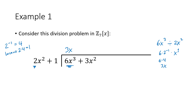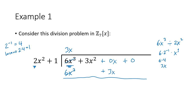Now we multiply. 3 times 2 is 6 and x times x squared is x cubed, so we get 6x cubed. We fill in the missing lower-degree terms: 3x times 1 is 3x. Now we subtract, remembering all arithmetic is in Z7. 3x squared minus 0 is 3x squared. Then 0 minus 3 is written as plus 4, because in Z7, negative 3 and 4 are the same thing.